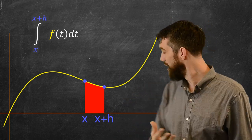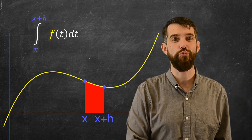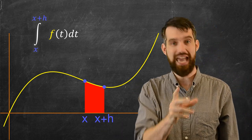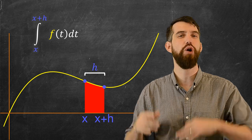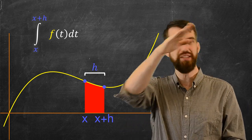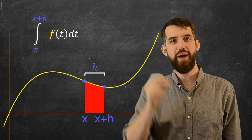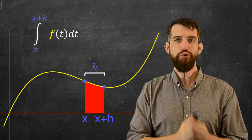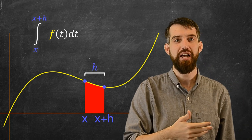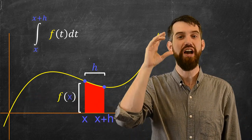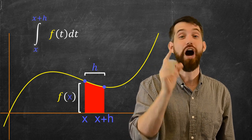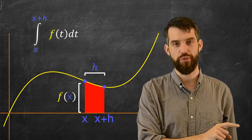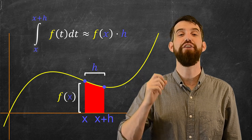Can I approximate what this little red area is? The width going from x to x+h is just h. This little red strip is not quite a rectangle — it has a curved top — but if h is really small, so x and x+h are right beside each other, you can approximate it as a rectangle with width h and height f(x). As h goes to zero, this strip is approximately a rectangle of width h and height f(x).